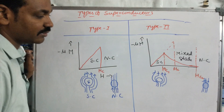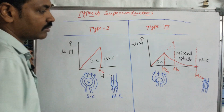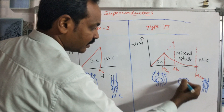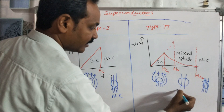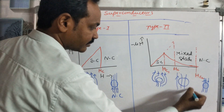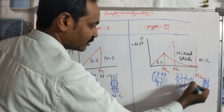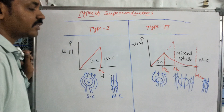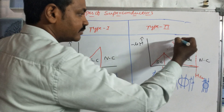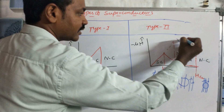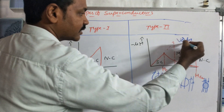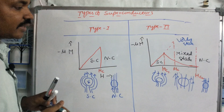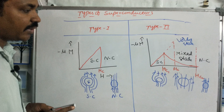Above Hc1, the material enters the normal state partially. Between Hc1 and Hc2 is the mixed state, also known as the vortex state. In this mixed or vortex state, the material still shows superconducting behavior partially.